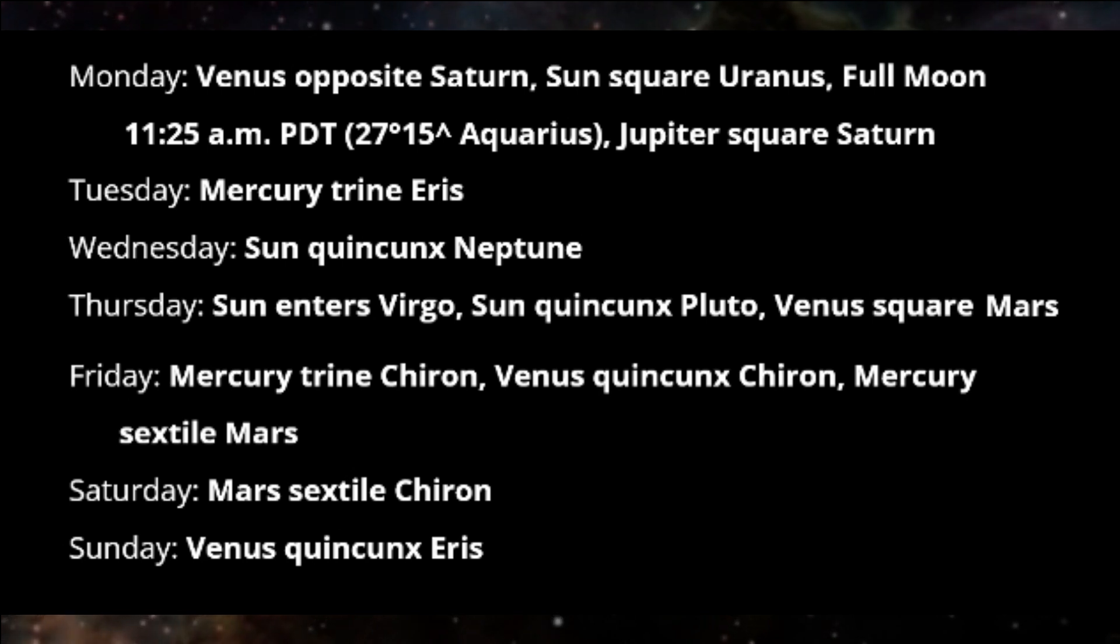Venus is square Mars on Thursday. This aspect represents challenges in personal relationships. Conversations that we hope will bring clarity could instead take on the form of blaming and finger-pointing.